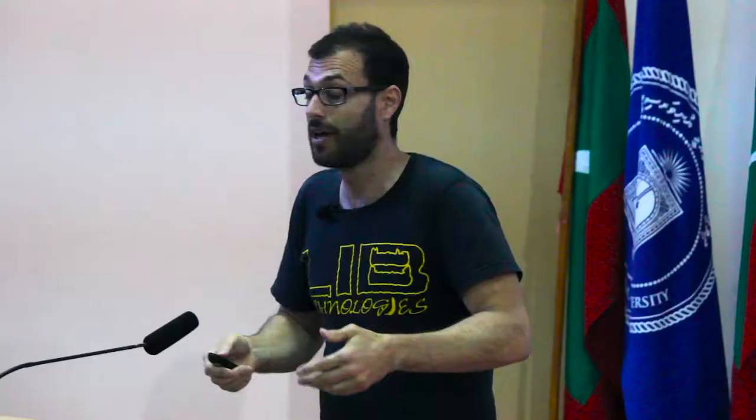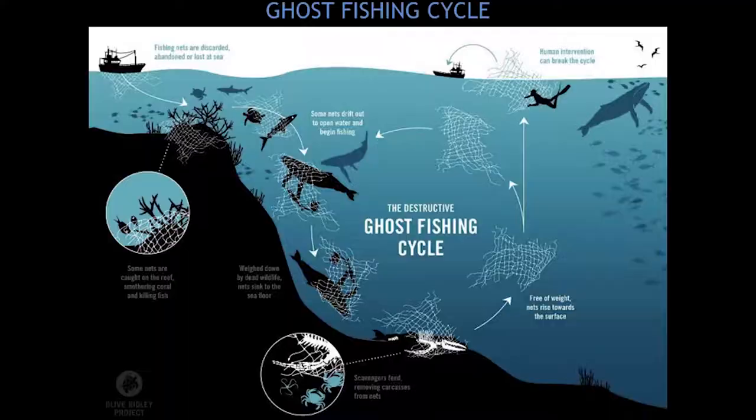As ghost fishing capacity increases, the weight of the net increases and it starts to sink. During periods of bad weather and storms, the net moves in the water, shaking out bioaccumulation and the ghost-caught creatures. Benthic communities also feed on whatever is inside the ghost net. Once the ghost fishing animals are removed and bioaccumulation reduces, the net decreases in density and rises to the surface again — this whole cycle continues for decades until humans intervene.